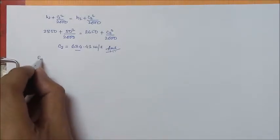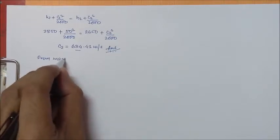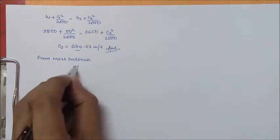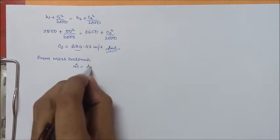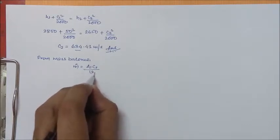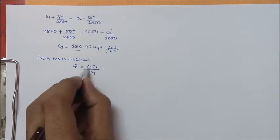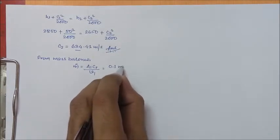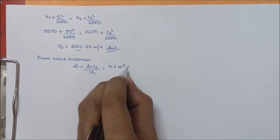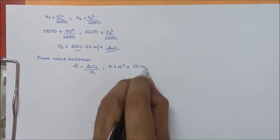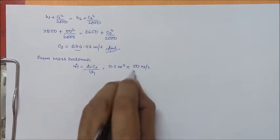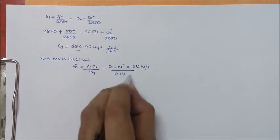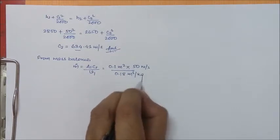Now to find out the mass flow rate, we have from mass balance M dot equal to A1 C1 by V1. A1 is given which is 0.1 meter square, C1 is 50 meter per second, and V1 is 0.18 meter cube per kg.